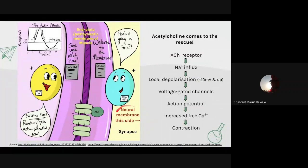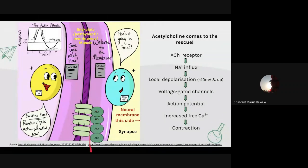The acetylcholine combines with the receptor and causes a conformational change — a shape change — so that the channels open and sodium flows inward. If more acetylcholine molecules bind in the end plate region, more sodium will flow inside. If more receptors are activated then more sodium flows inside, resulting in a local depolarization.